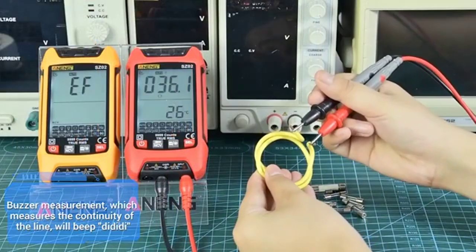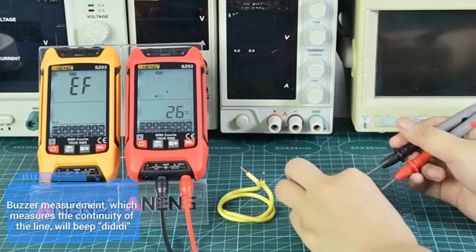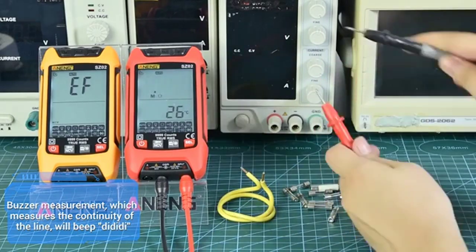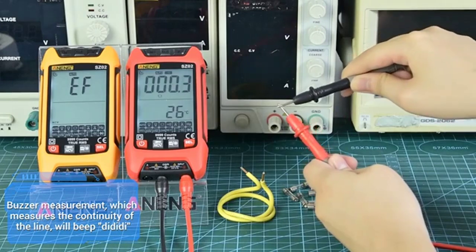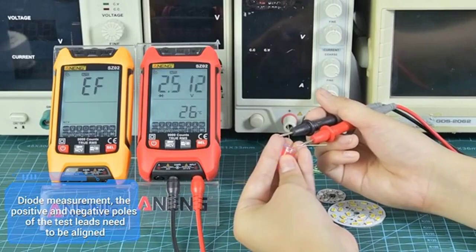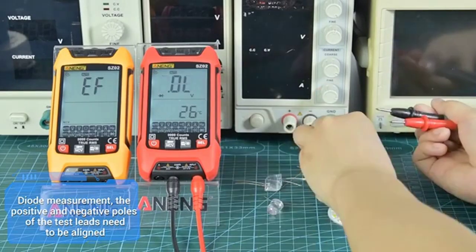Buzzer measurement measures the continuity of the line and will beep. For diode measurement, the positive and negative poles of the test leads need to be aligned correctly.